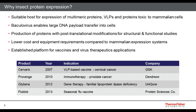Insect cell expression systems have been around for about 30 years and have been a suitable platform for expression of multimeric proteins, virus-like particles, proteins that are toxic to mammalian cells, and in recent years have gained popularity for AAV expression. Baculovirus-based technologies enable a large DNA payload to be transferred to cells, making them favorable for large proteins. Proteins expressed in insect cells typically have simpler, more homogeneous post-translational modifications compared to mammalian cells.